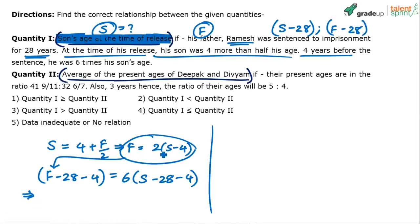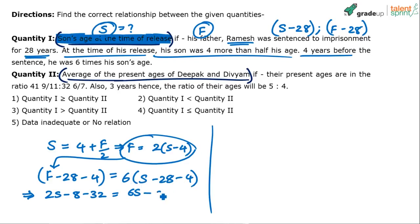Substituting F = 2S - 8 into the equation: (2S - 8) - 32 equals 6 times (S - 32). Simplifying: 2S - 40 equals 6S - 192. Rearranging gives 6S - 2S = 192 - 40, so 4S equals 5 times 32 minus 8, which is 160 minus 8 equals 152.